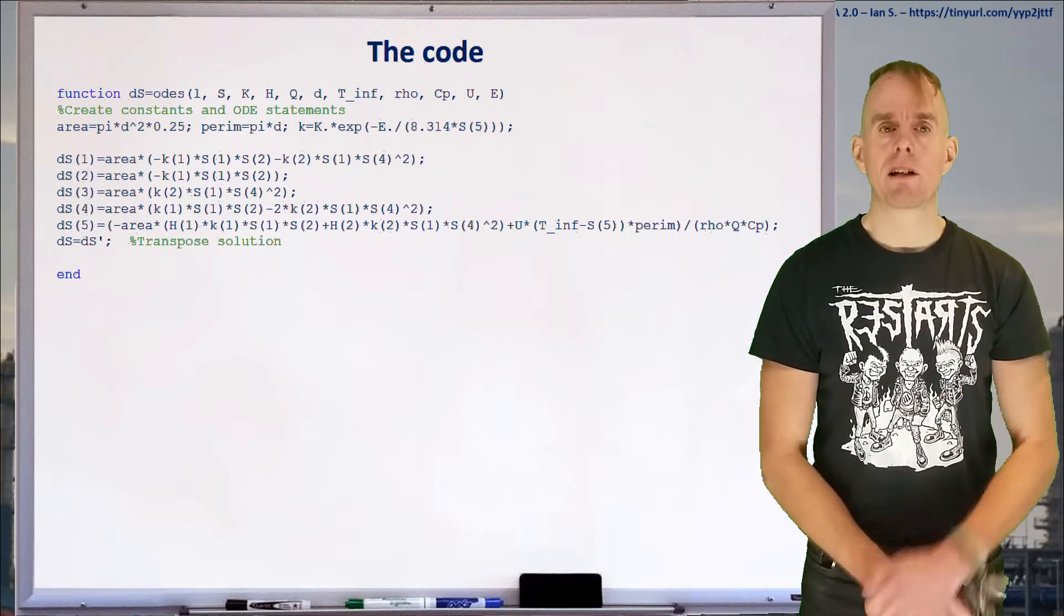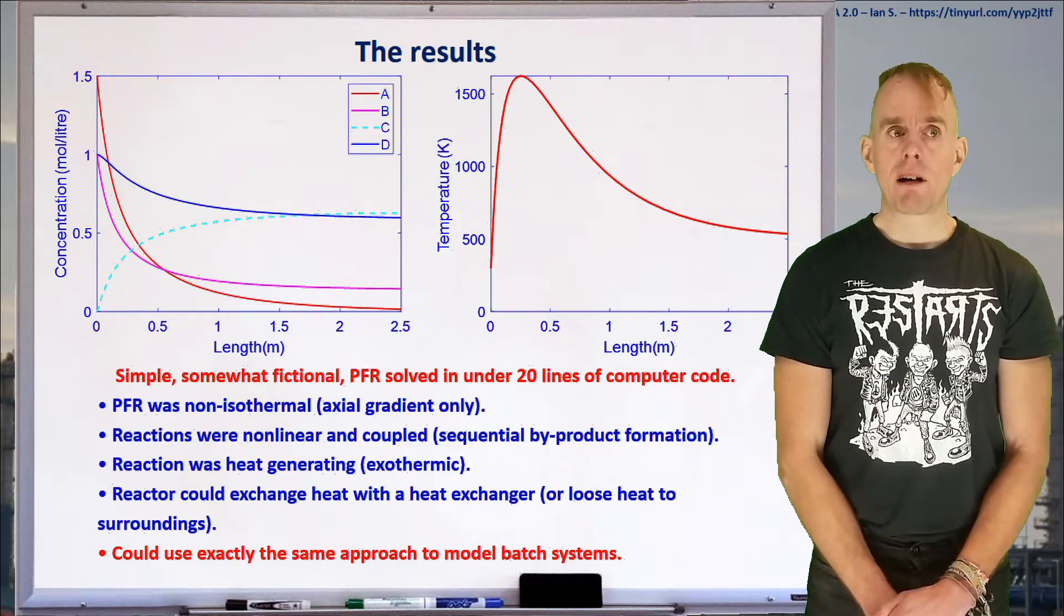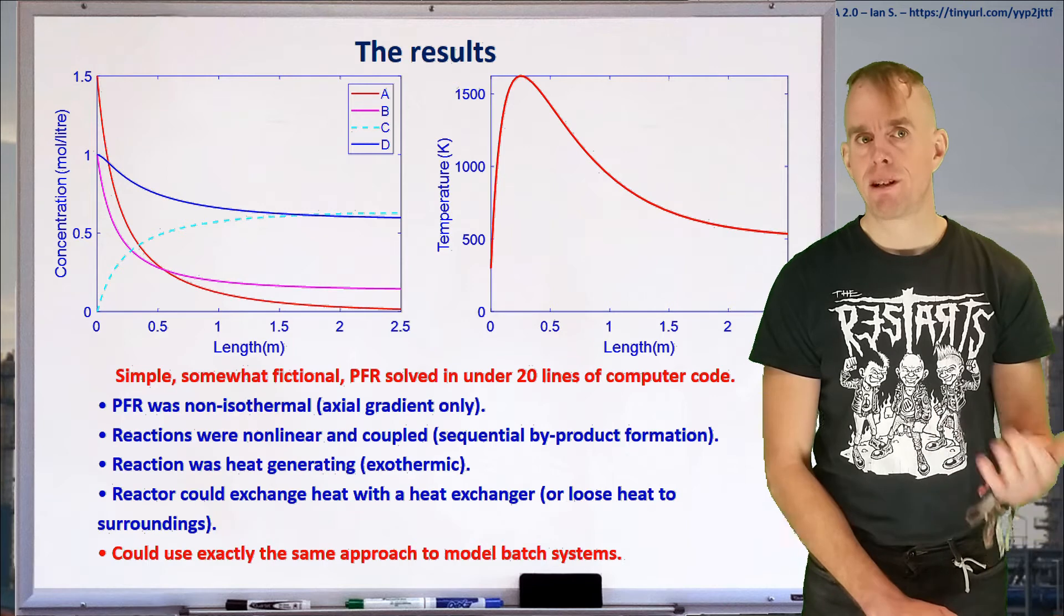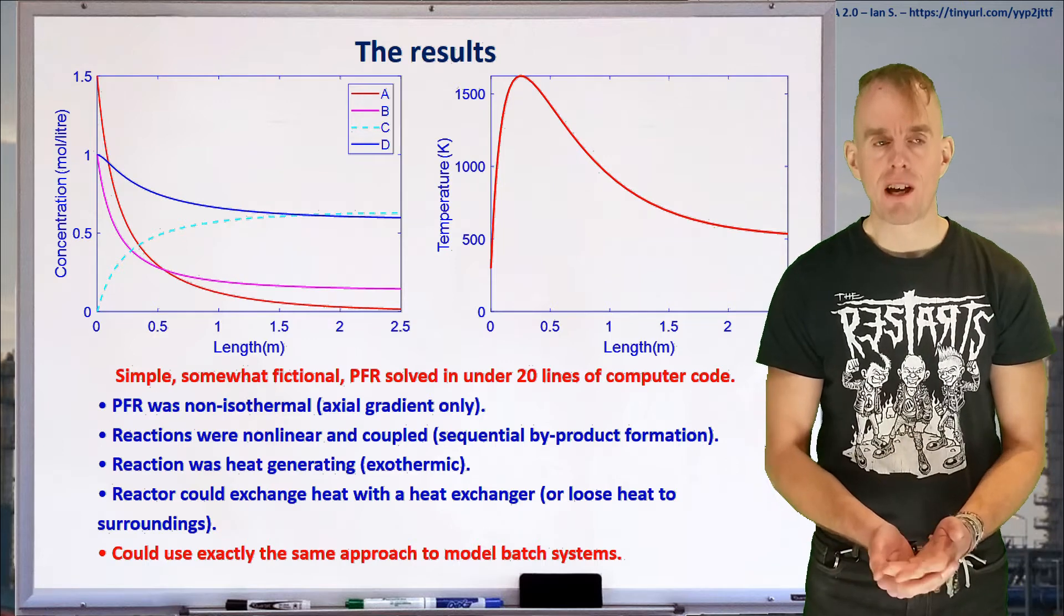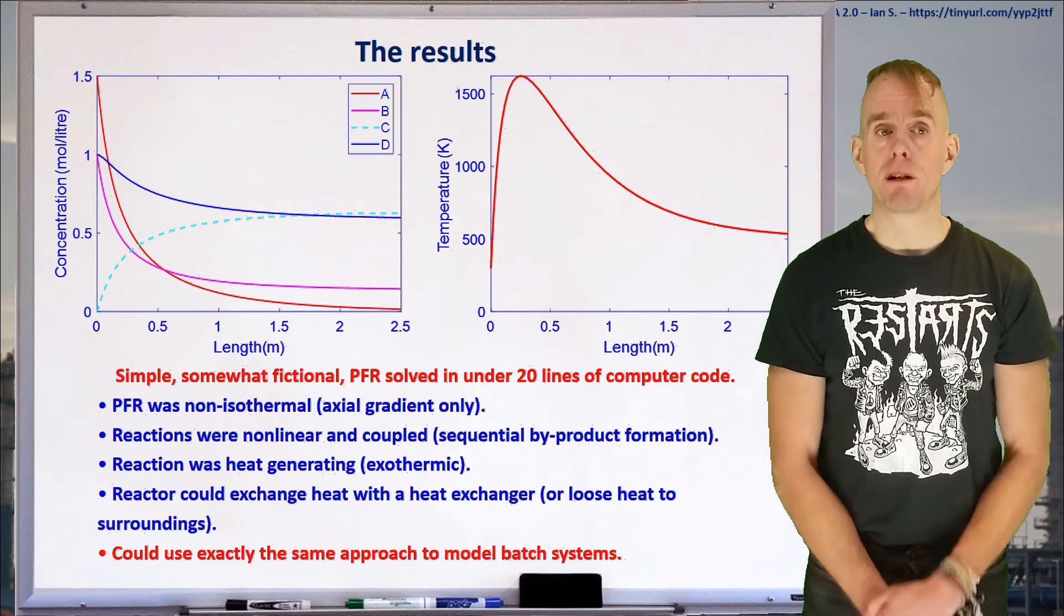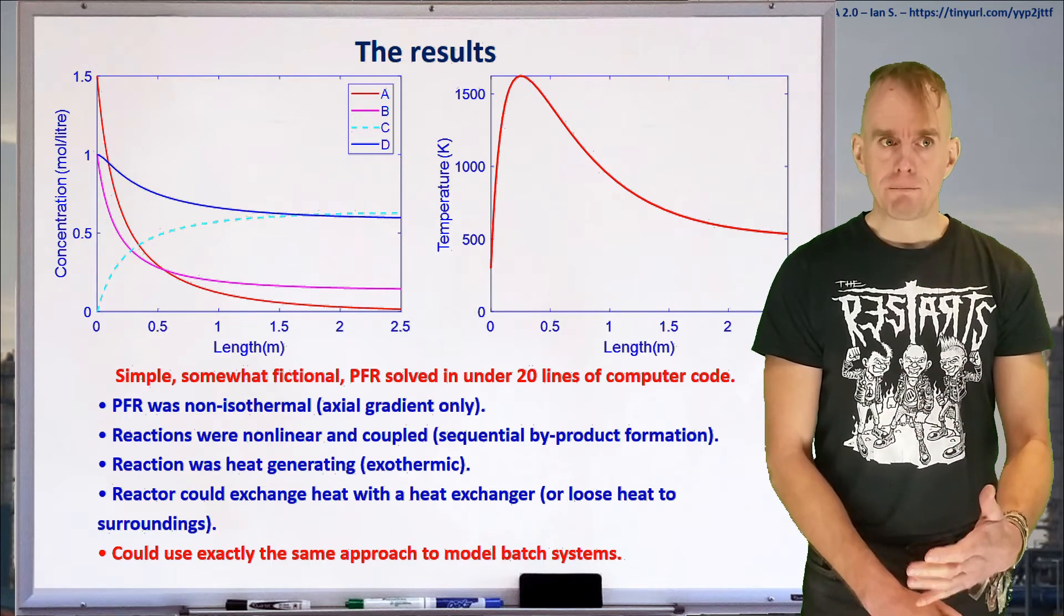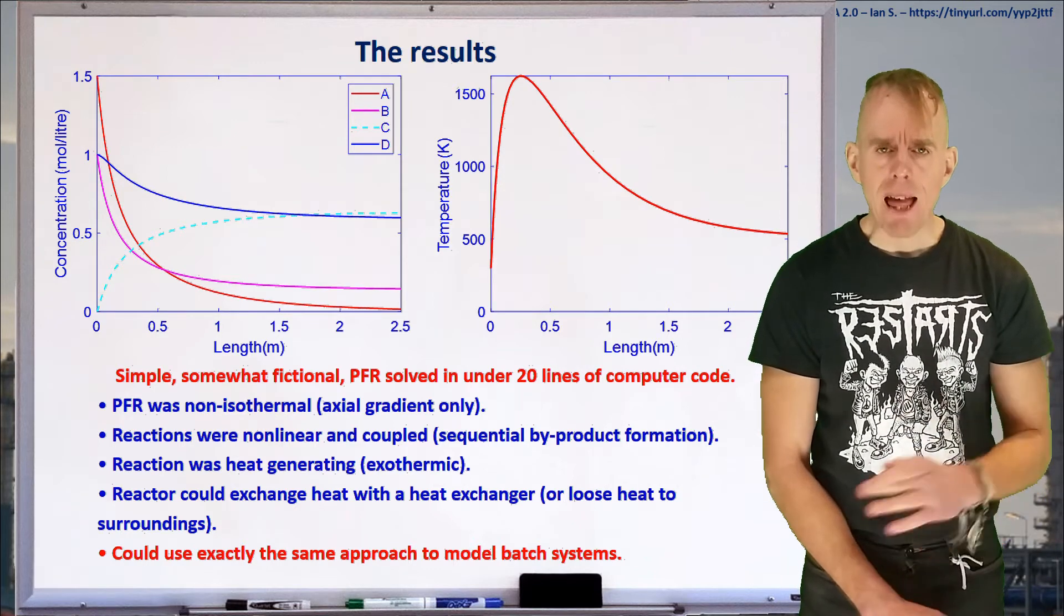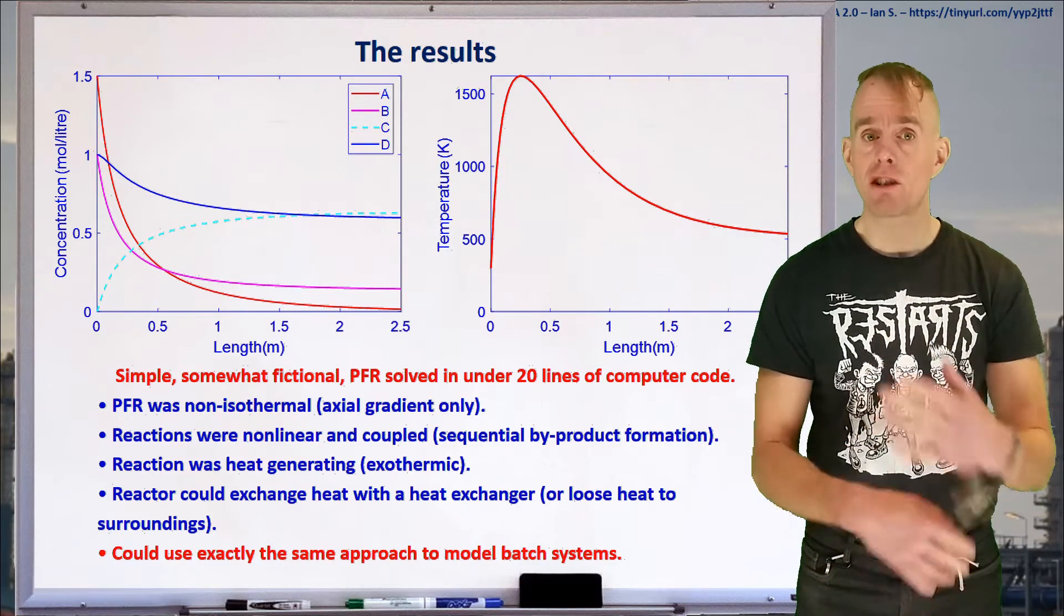If you were to transcribe that code into MATLAB and run it, this is what you'd get: two graphs. One showing concentration of species as a function of length, and one showing temperature as a function of length. So we've got some chemical reactions, heat transfer conditions, and we've written a model very quickly to figure out what the conversion profiles look like. It was a simple model written in under 20 lines of code. We made assumptions: only axial temperature gradients, non-linear reactions with sequential byproduct formation, heat generation from exothermic reaction, and heat exchange with the environment.